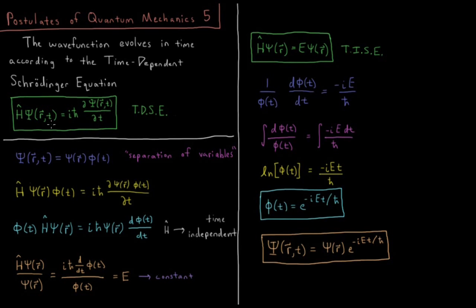So we have a function here of space and of time, and typically when we have some partial differential equation like we do here, partial derivative with respect to time, we want to separate out those two functions into a function of space and a function of time. So we're going to separate out our time-dependent wave function into a time-independent wave function times a time function. And this again would be called separation of variables.